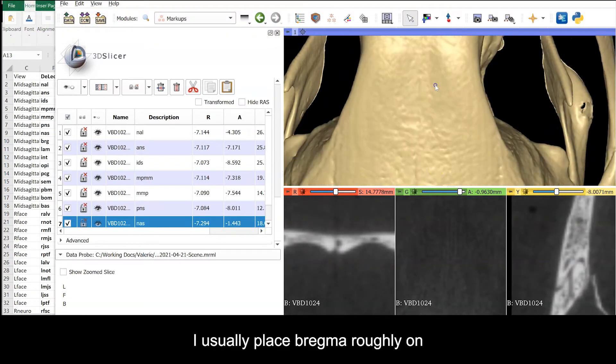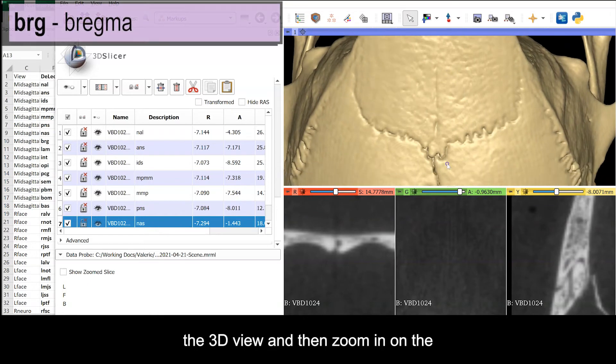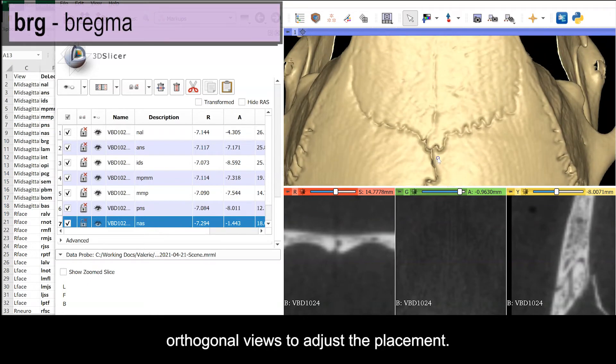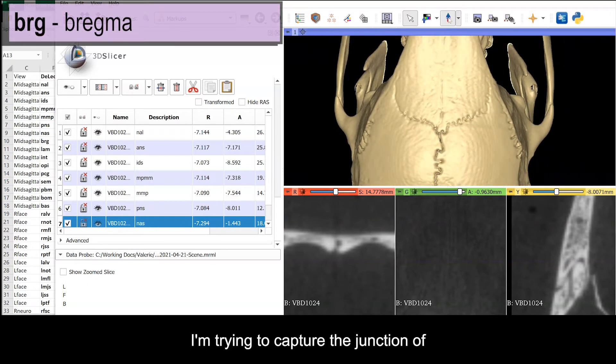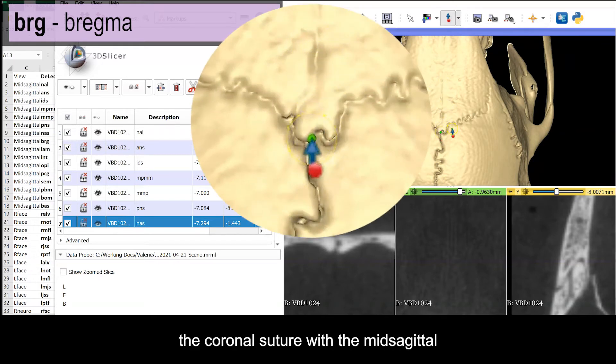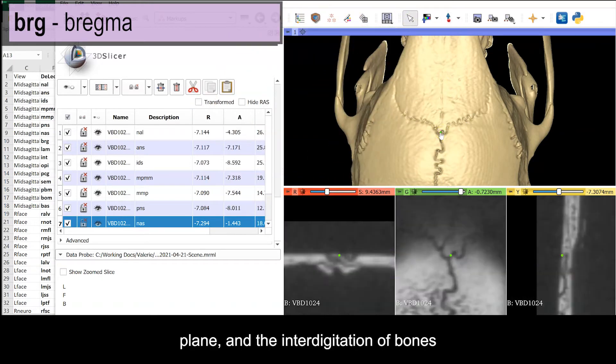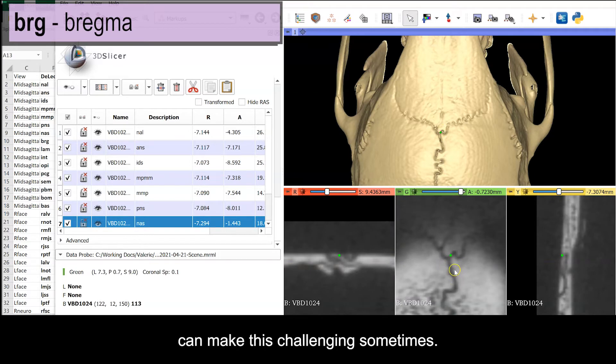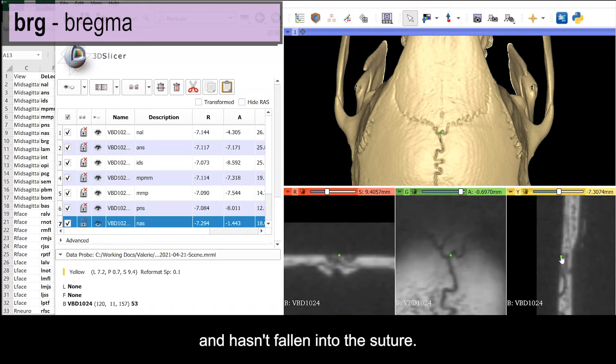I usually place bregma roughly on the 3D view and then zoom in on the orthogonal views to adjust the placement. I'm trying to capture the junction of the coronal suture with the mid-sagittal plane, and the interdigitation of bones can make this challenging sometimes, so you may need to project the landmark. Also confirm in the orthogonal views that the landmark is on the dorsal surface and hasn't fallen into the suture.